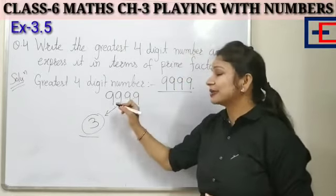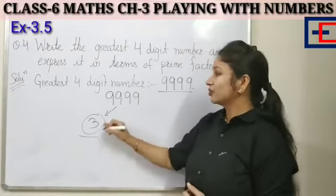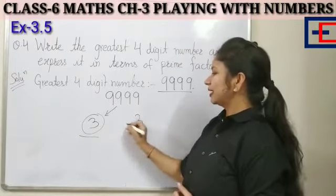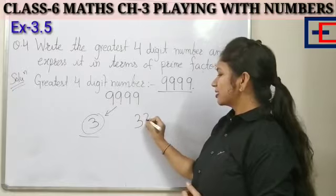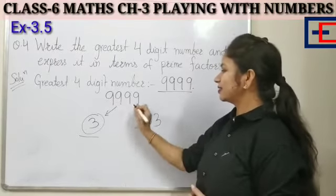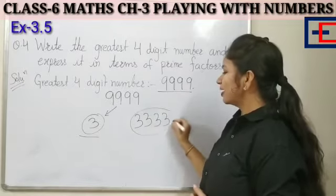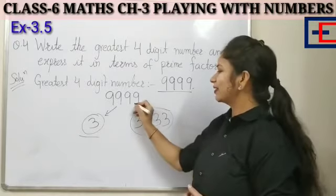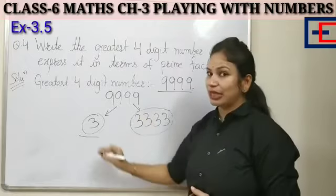Now, we will divide this number by 3. So, what do we do? 3, 3 is 9. Again, 3, 3 is 9. Again, 3, 3 is 9. And again, 3, 3 is 9. So, 3,333.